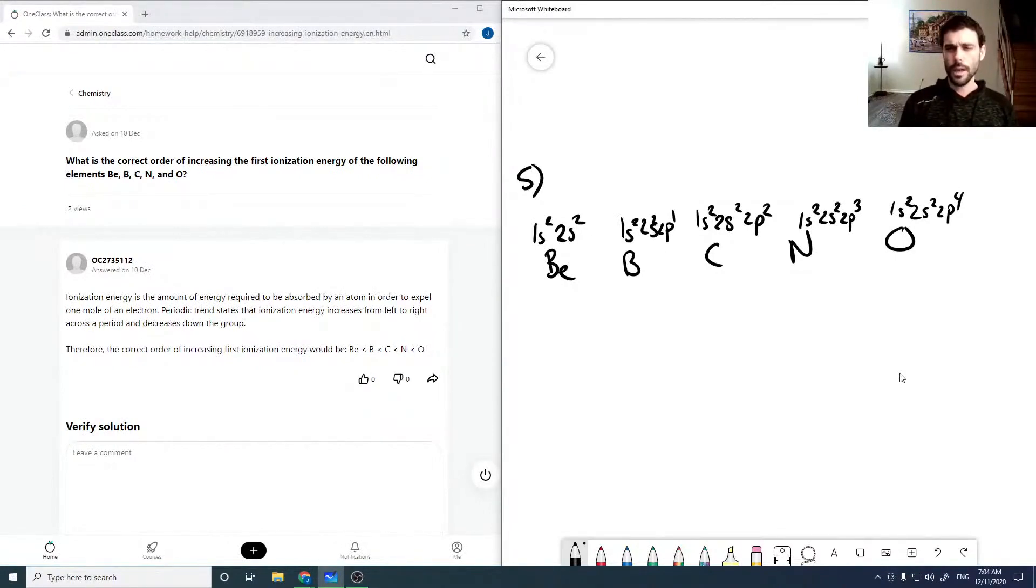In all cases, our valence electrons which will be the ones that are removed are in n equals 2 states. Our energy is going to be approximately proportional to minus 1 over n squared. In each case we've got an n equals 2 state, so that appears to be the same.